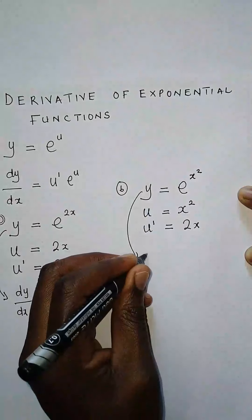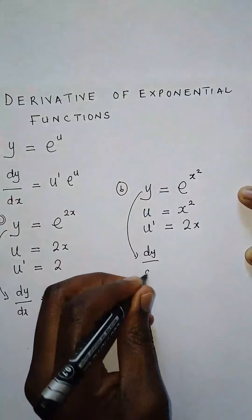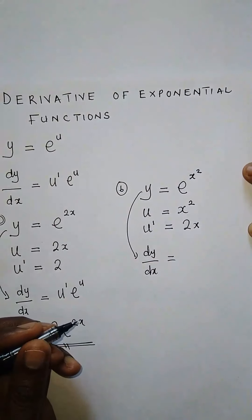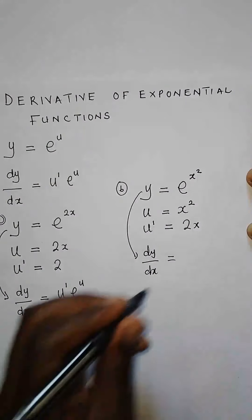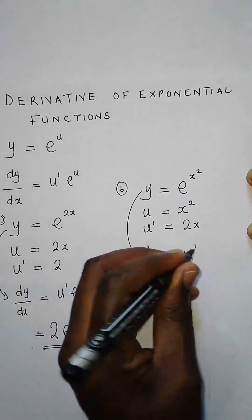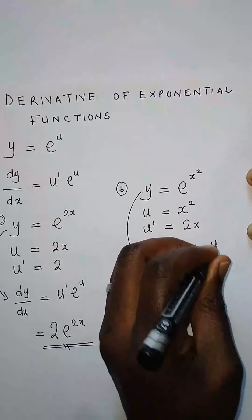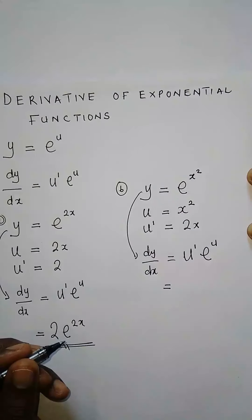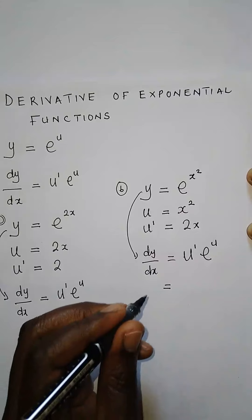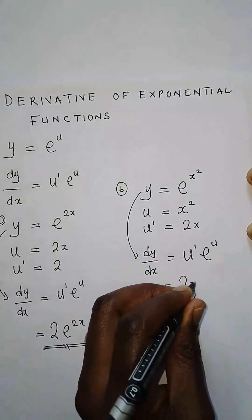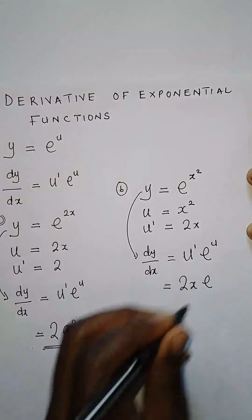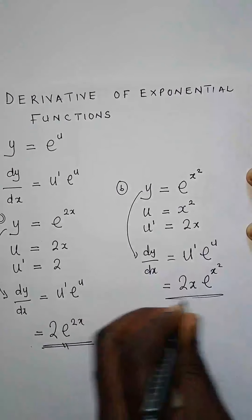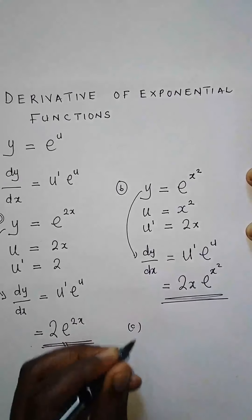For this function dy/dx, by definition of finding the derivative of an exponential function, we say u prime times e to the power u. Our u prime is 2x, and e to the power u where our u is x squared. So dy/dx equals 2x times e to the power x squared.